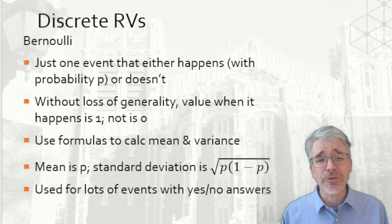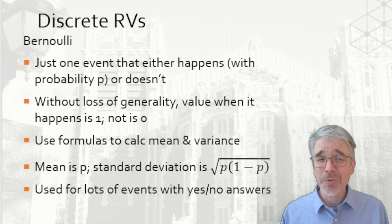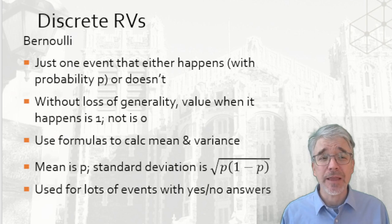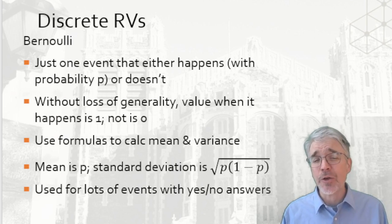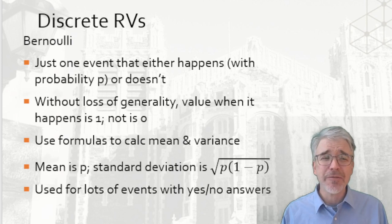Another common discrete random variable we use is Bernoulli, which is where there's just one thing and either that one thing happens or it doesn't happen. Just two outcomes. Either something happens or not. Without loss of generality, we'll call the value when it happens to be one and the value when it doesn't happen to be zero. You can put in any other values with a bit of a linear transformation.